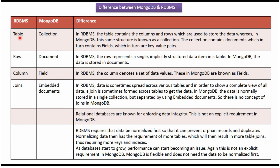In RDBMS, the table contains columns and rows, which are used to store the data. Whereas in MongoDB, the same structure is called a collection. The collection contains documents, which in turn contain fields, which in turn are key-value pairs.